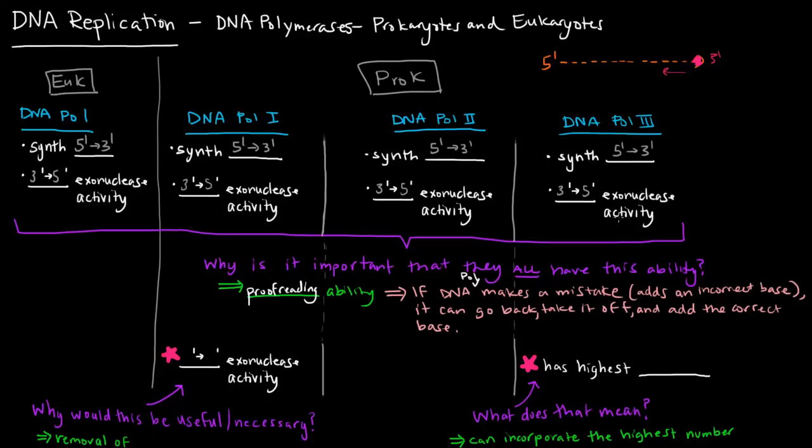In order to take it off, it needs to have the exonuclease activity, and since it's going backwards, it's going 3' to 5' prime. So the 3' to 5' exonuclease activity is a proofreading ability.